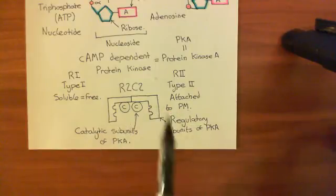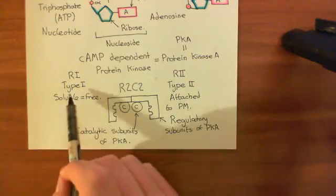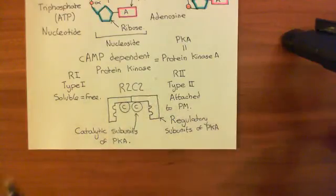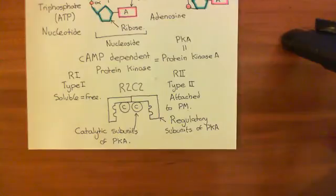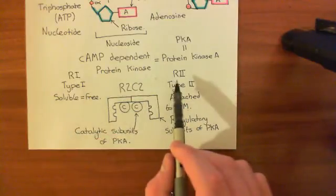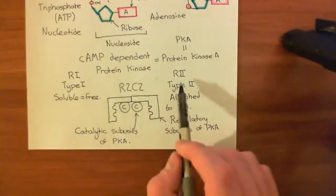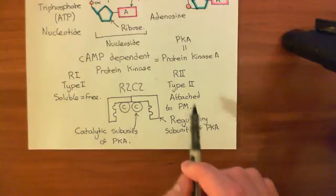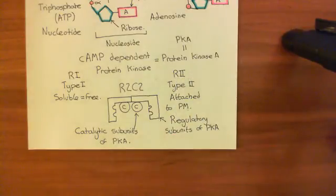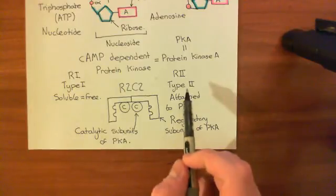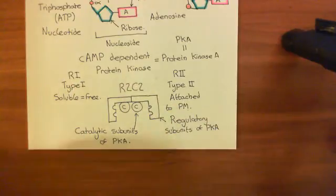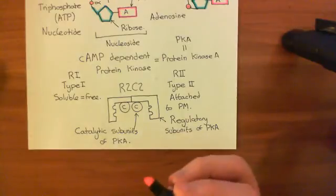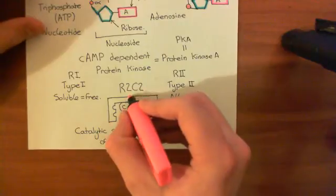There's only one type of catalytic subunit — it's the same whether you are talking about a type 1 or type 2 protein kinase A R2C2 complex. The bit that differs is the regulatory subunit, and the regulatory subunit determines whether it binds or not to these complexes at the plasma membrane. Type 2 regulatory subunits will bind to proteins at the plasma membrane and end up in targeted complexes there. Type 1 regulatory subunits don't bind to these proteins and therefore don't end up targeted in these complexes.